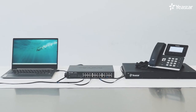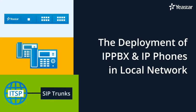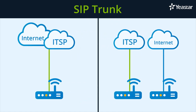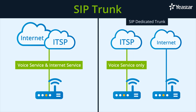Our PBX and IP phone have been deployed successfully. It is time for SIP trunk configuration. Here's the Ethernet cable of the SIP trunk provided by the service provider. Generally speaking, there are two types of SIP trunk. One provides voice services as well as internet service, while the other one provides voice service only, also known as SIP dedicated trunk. The way we deploy these two types of SIP trunk is different.